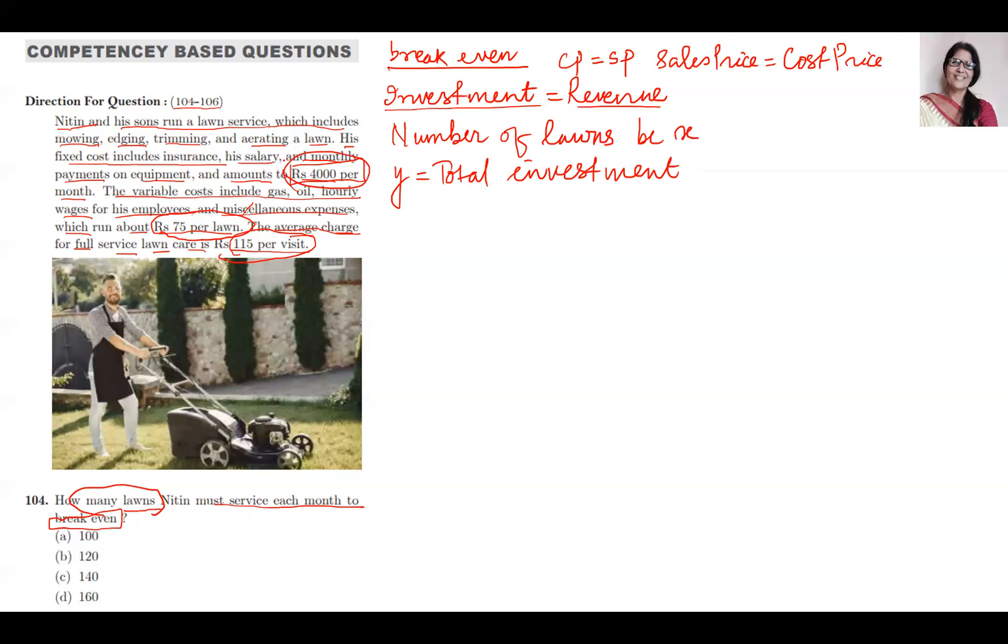According to this concept, first he is spending 4,000 rupees each month as a fixed charge. And per lawn he is investing 75 rupees, so 75 times x. This is the total money he is investing.